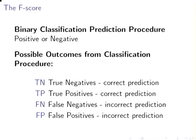We have four possible outcomes from the procedure. We could have cases that are actually negative and correctly predicted to be negative — we call those true negatives. True positives are cases that are actually positive and correctly predicted to be positive. But the other two are just as important, in fact more important: the false negative, which is a positive case incorrectly predicted as negative, and a negative case incorrectly predicted as a positive.